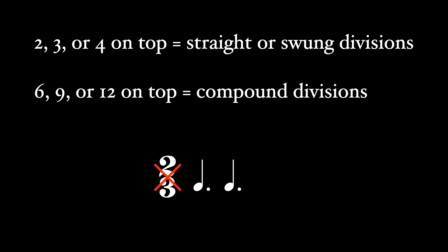In this case, that's the eighth note. So if there are two dotted quarter notes per measure, then there are six eighth notes per measure. So our time signature becomes six-eight.